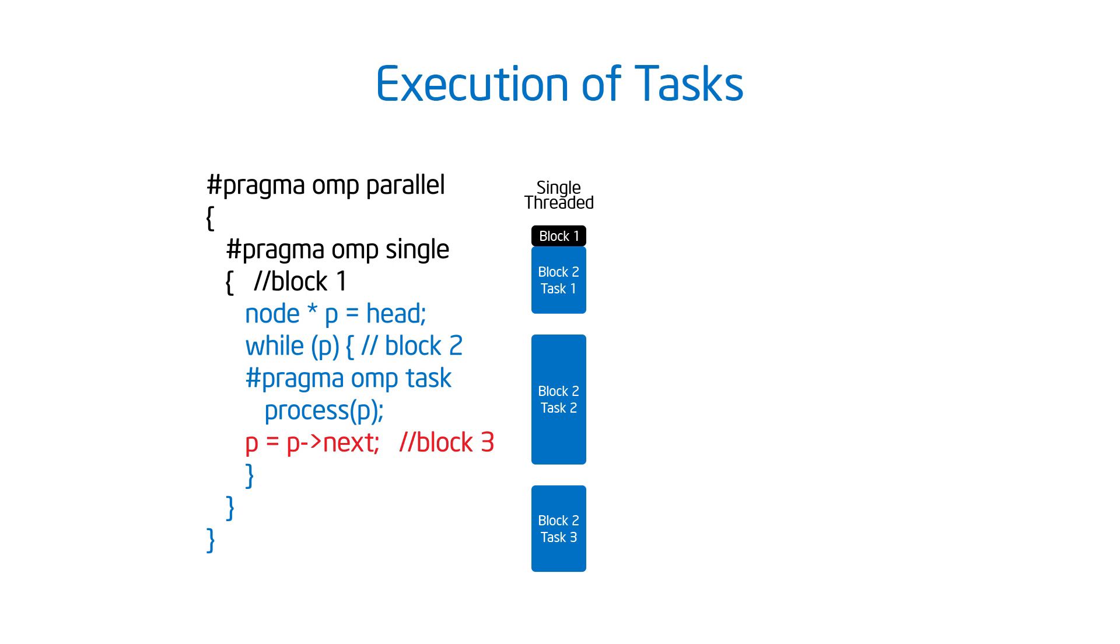Then that thread that did the work, the black to go through and set up the while loop, it's then going to increment the loop. So that will be the next block. That will be block three.